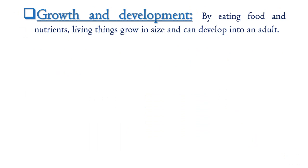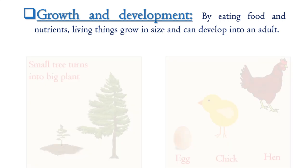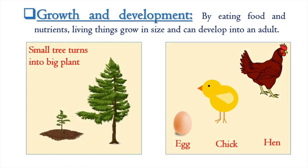The second characteristic we observe in living things is growth and development. By eating food and nutrients, living things grow in size and can develop into an adult. For example, a small tree turns into a big plant, or a hen grows through an egg and chick.